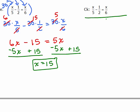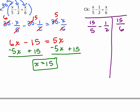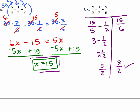Let's check it — when you check it, you're stuck with all these fractions. So we have 15 over 5 minus 1 half, and is that the same thing as 15 over 6? So 15 divided by 5 is 3, minus 1 half — 3 minus 1 half is 2 and a half, or 5 halves. And 15 divided by 6, you can reduce by dividing top and bottom by 3, which is also 5 halves. So both sides reduce to 5 halves, meaning x equals 15 is the correct answer — it checks.